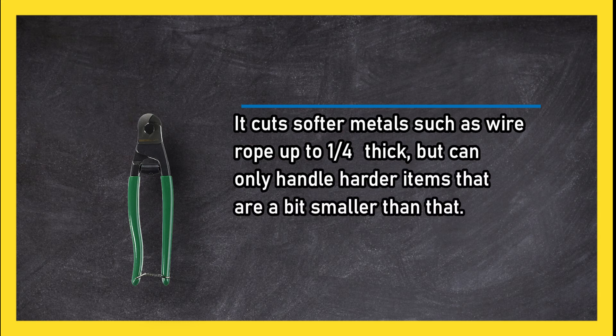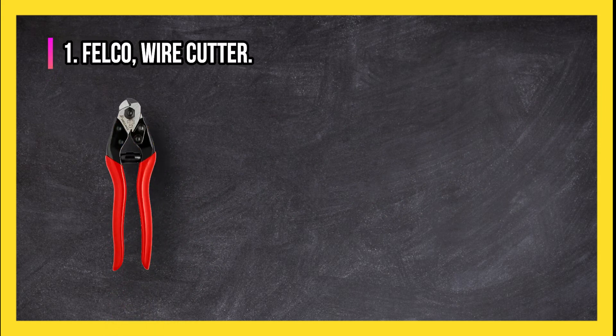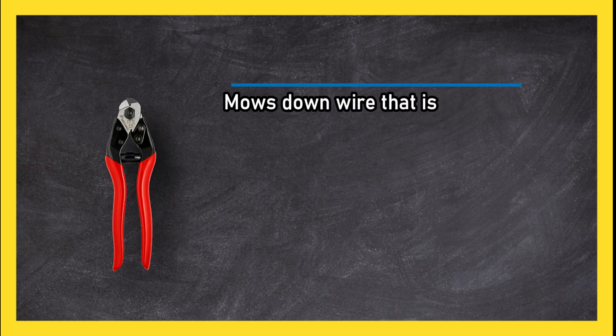At number one, Felco Wire Cutter mows down wire that is less than one quarter of an inch thick and leaves a clean cut every time.